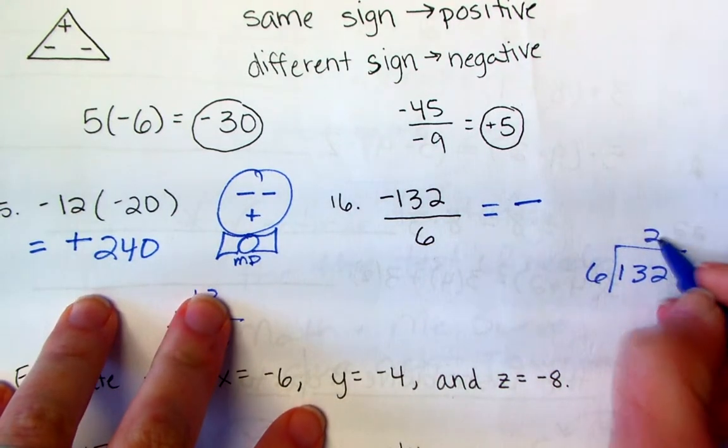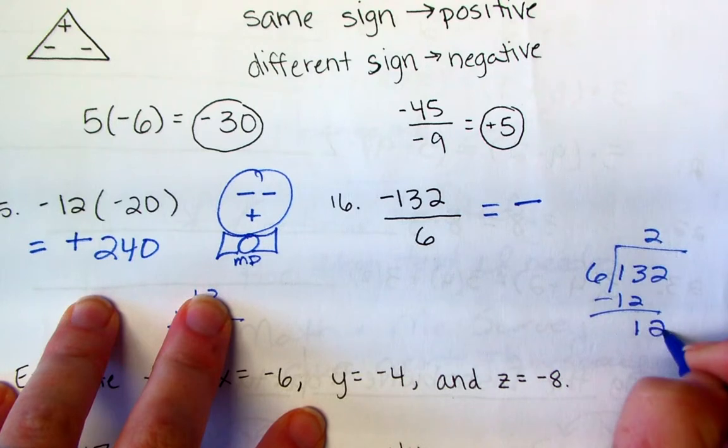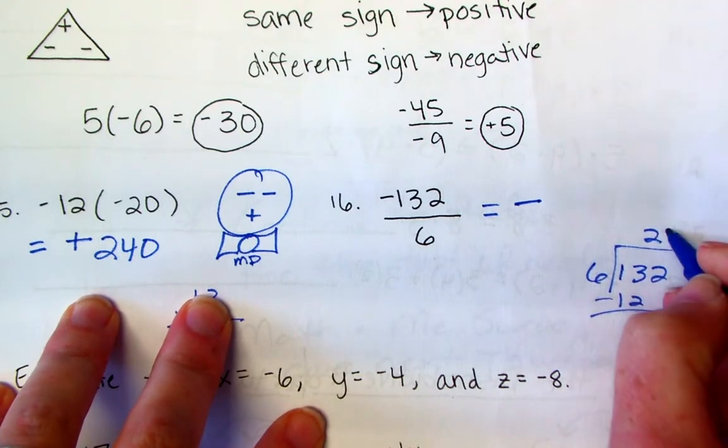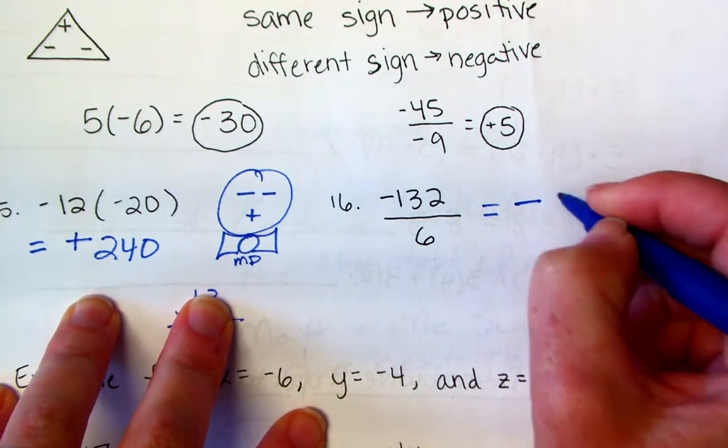6 goes into 13 two times, gives me 12, 1, 2. 6 goes into 12 two times. So my final answer is negative 22.